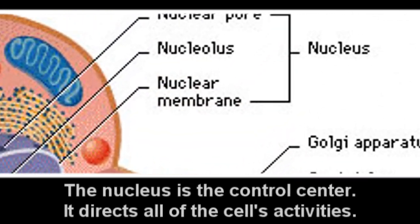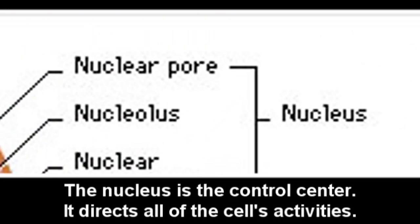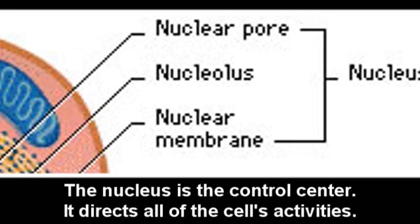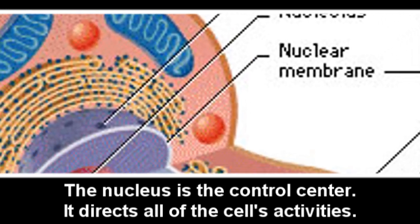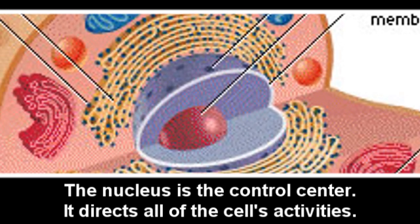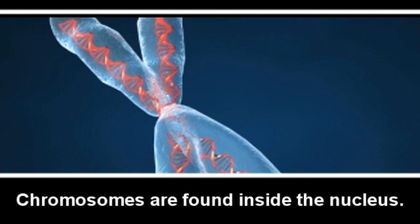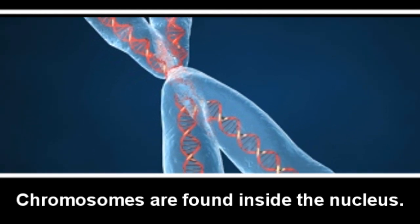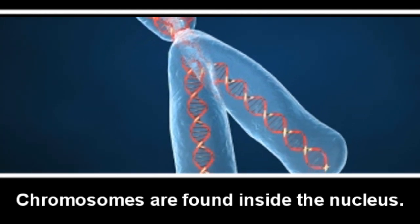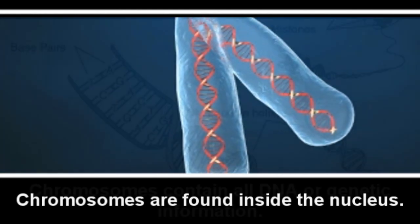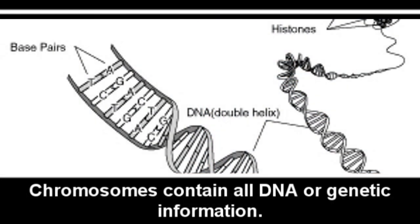The nucleus is the control center. It directs all of the cell's activity. Chromosomes are found inside the nucleus. Chromosomes contain all DNA, or genetic information.